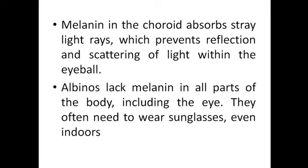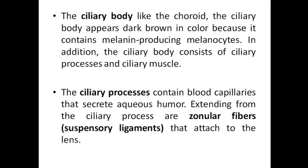Albinos lack melanin in all parts of the body including the eyes, so they often need to wear sunglasses even indoors, as the lack of melanin affects their process of vision. The ciliary body, like the choroid, appears dark brown in color due to melanin-producing melanocytes, and in addition it consists of ciliary processes and ciliary muscles.